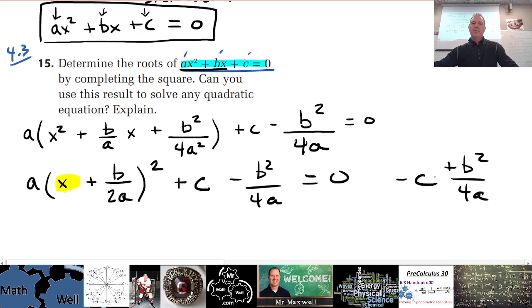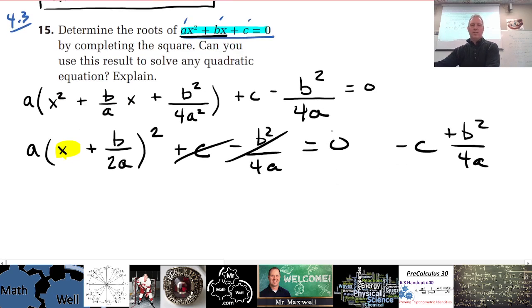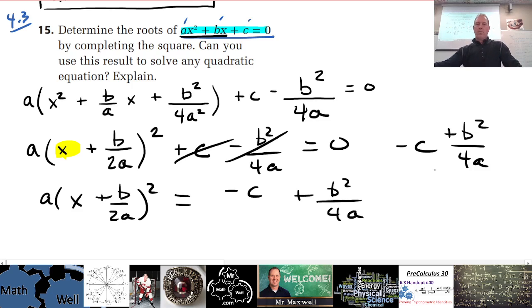Let's get everything else over the other side. I'm going to add b squared over 4a over here. I'm going to subtract c from both sides to get rid of those, and then I'm going to divide by a. Let's do that, one thing at a time here. So I'm going to be left with a times x plus b over 2a all squared, and then I'm going to have minus c plus b squared over 4a.